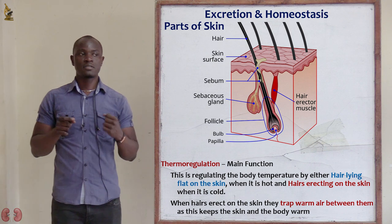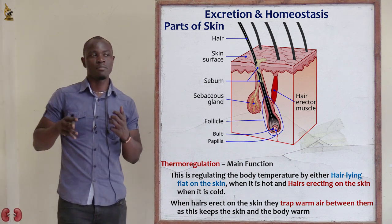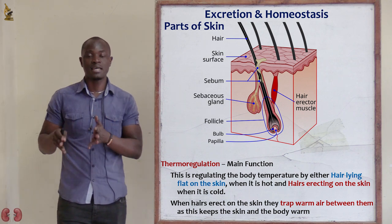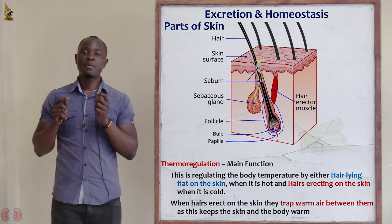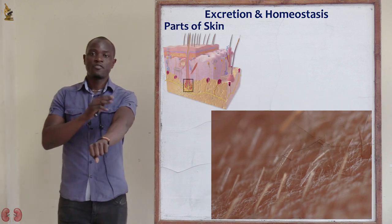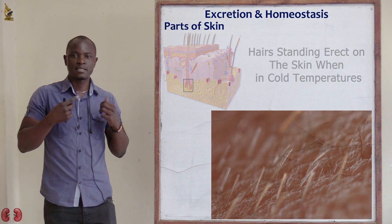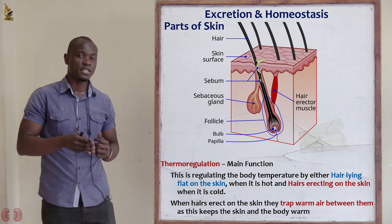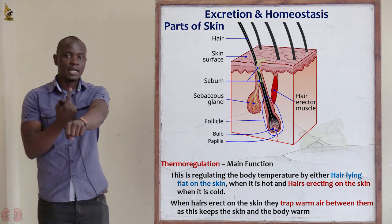The function of hair on the skin is thermoregulation — the regulation of temperature in the body. People living in hot environmental conditions tend to have very minute or absent hairs on the skin, while people living in very cold places like Greenland have very many hairs on the surface of the skin. When one is feeling cold, the hairs on the skin erect and stand upright.